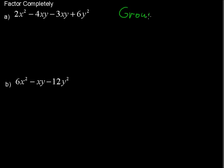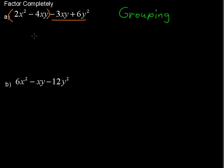Grouping is a process that looks at the reverse of distribution to factor this. We'll look at this group: 2x squared minus 4xy is one group, and negative 3xy plus 6y squared is another group.